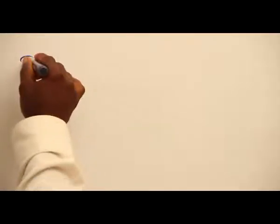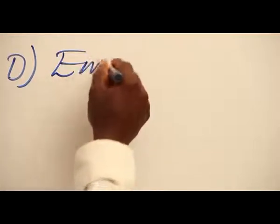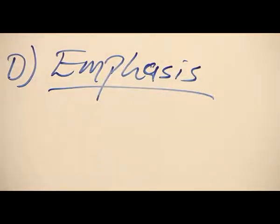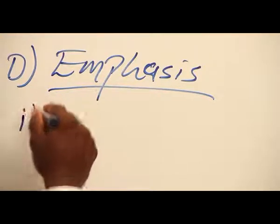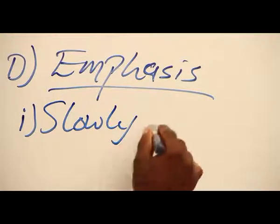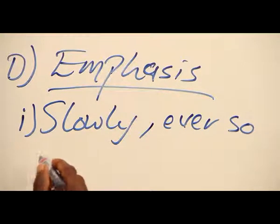Now, let's take D. For D, we sometimes use adverbs for emphasis. In this case, what do we do? We can bring the adverb to the beginning of the sentence and then double it somewhat to emphasize the point. Now, we'll take an example to explain this. We can have 'slowly, ever so carefully.'